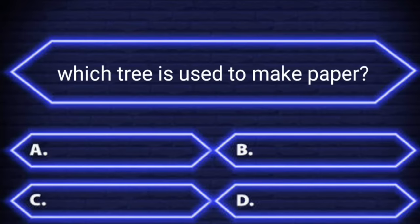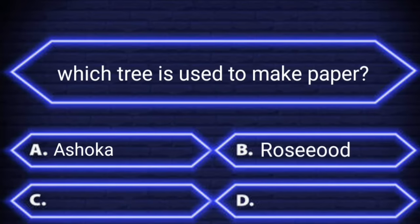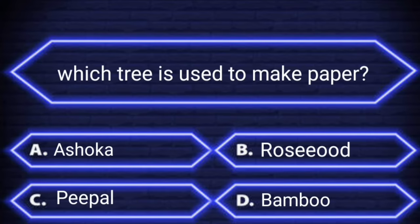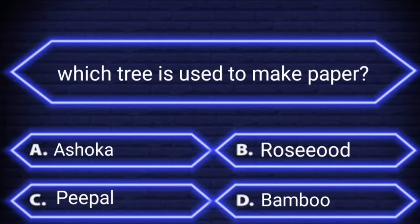Which tree is used to make paper? A. Ashoka. B. Rosewood. C. Poplar. D. Bamboo. Your time starts now. The right answer is Bamboo. If you like, do it again.